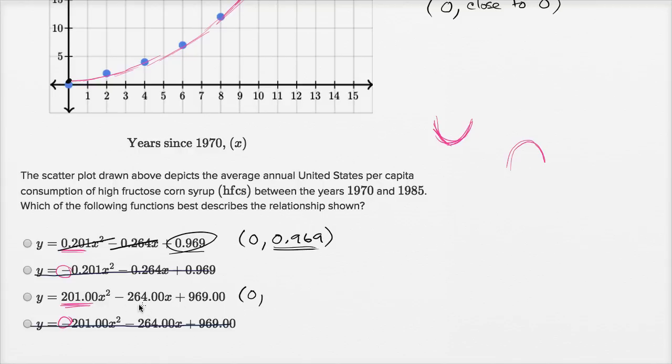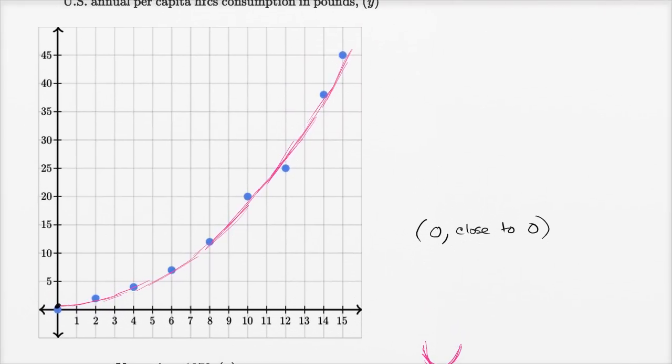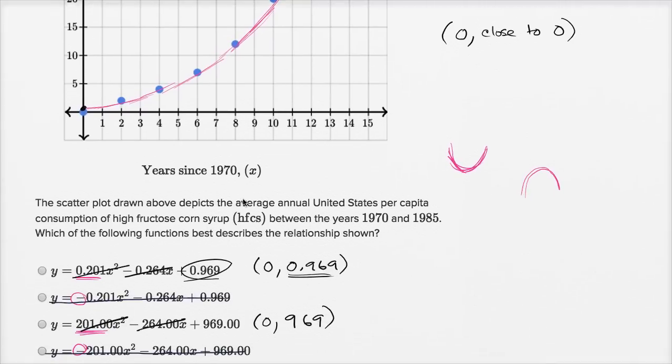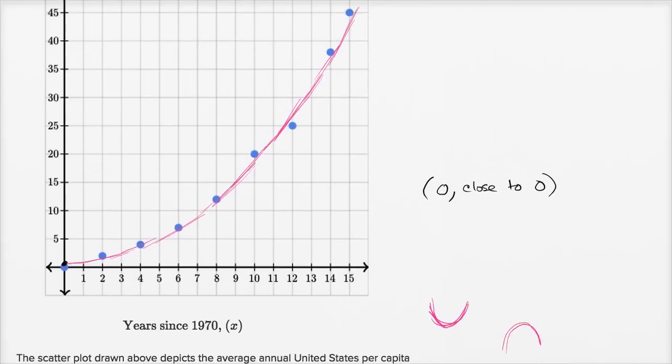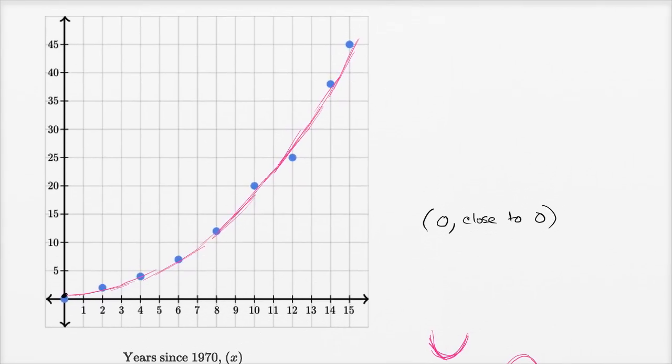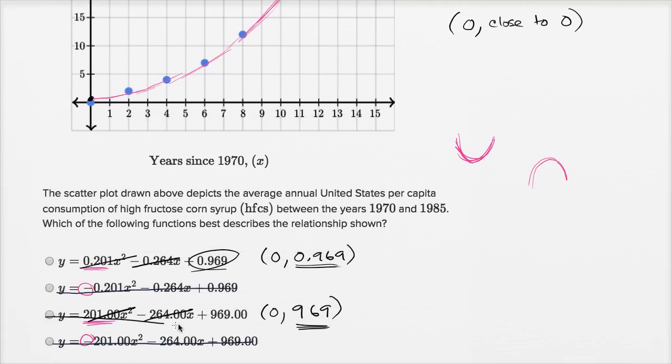Let's see this one. This choice right over here, when x is zero, this term goes away, this term goes away, y is 969. So if you picked this choice right over here, this is not close to zero. This is nowhere. This actually would be off the charts right over here, the point 0 comma 969. It wouldn't even fit on that graph. So you can definitely rule this one out, and we would be left with that choice right there.